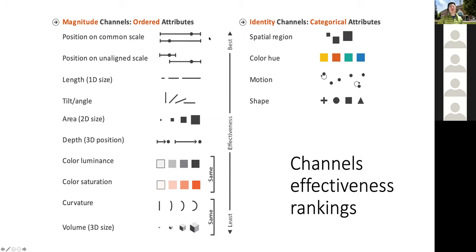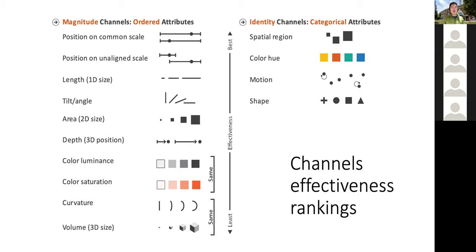You have to decide which attribute is most important and assign the most effective channel to it. Maybe the amount of profit is most important, so you'd use position to represent price and use color or shape to represent product type. But if the location of the store or type of product is most important, you may want to use spatial region for that, and use other channels like length or size to represent price or profit.